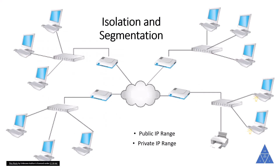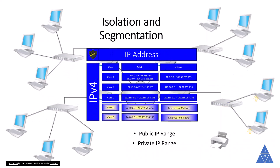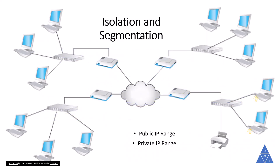Azure Virtual Network allows you to create multiple isolated virtual networks. When you set up a virtual network, you define a private IP address space using public or private IP address ranges. The private IP range only exists within the virtual network and isn't internet routable. You can divide that IP address space into subnets and allocate part of the defined address space to each named subnet.